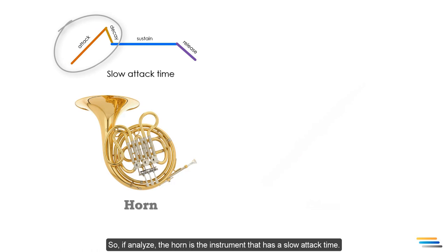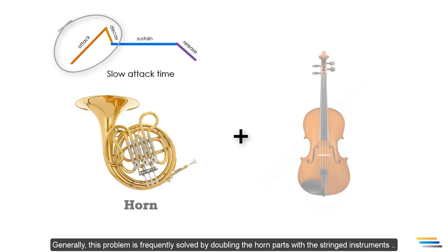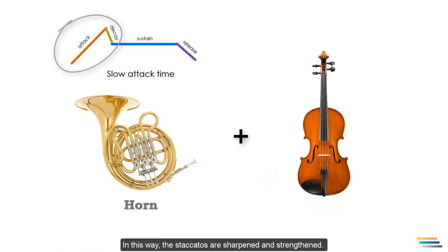And this property makes it lazy even with staccato playing. Generally, this problem is frequently solved by doubling the horn part with the string instruments so that they have a short attack time. In this way, the staccatos are sharpened and strengthened.